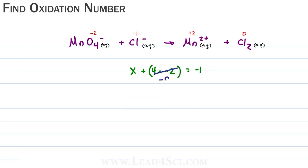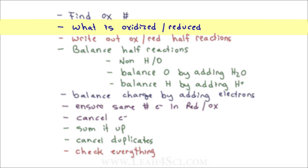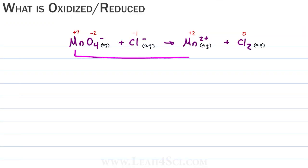That leaves us with the complicated MnO4-. We know oxygen is minus two, but Mn is unknown. We set it up as x for Mn plus four oxygens times negative two equals the total charge of minus one. So x minus eight equals minus one; adding eight to both sides gives x equals plus seven for Mn. Next we figure out what gets oxidized and reduced. Mn +7 goes to Mn +2 — seven goes down, so this is the reduction half reaction. Cl- goes from minus one up to zero — this is the oxidation half reaction.